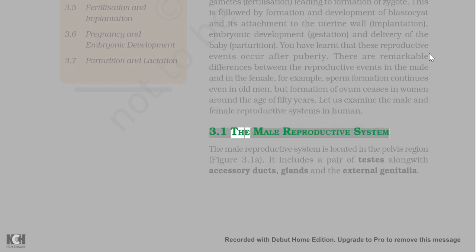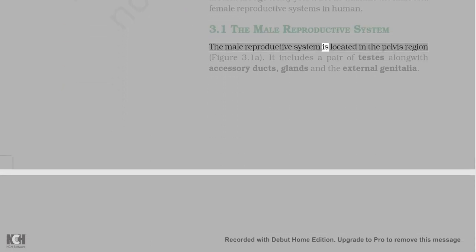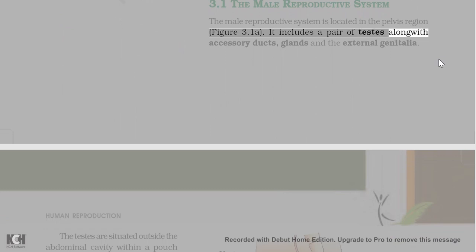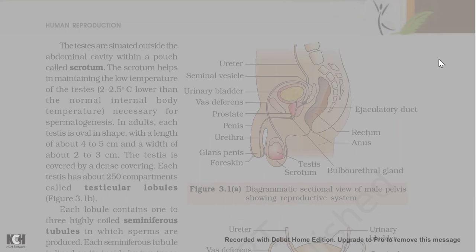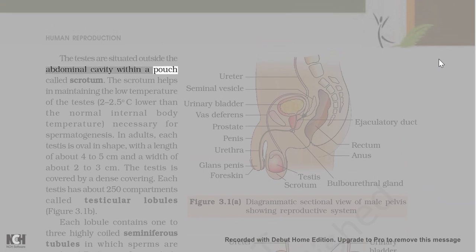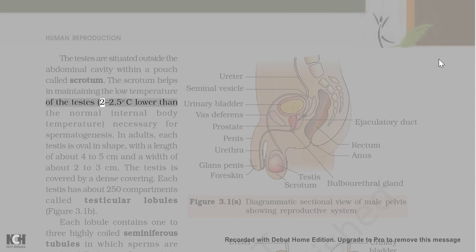The male reproductive system is located in the pelvis region. It includes a pair of testes along with accessory ducts, glands, and the external genitalia. The testes are situated outside the abdominal cavity within a pouch called scrotum. The scrotum helps in maintaining the low temperature of the testes, 2 to 2.5°C lower than the normal internal body temperature, necessary for spermatogenesis.